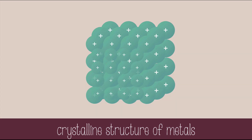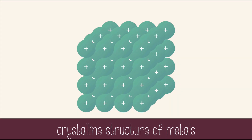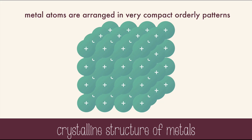Like ionic compounds, metal atoms are arranged in crystalline structures — very compact, in orderly patterns. But unlike ionic compounds, the cations can easily slide past one another under force because of those freely floating valence electrons. Ionic compounds will shatter, but metals will flatten out.